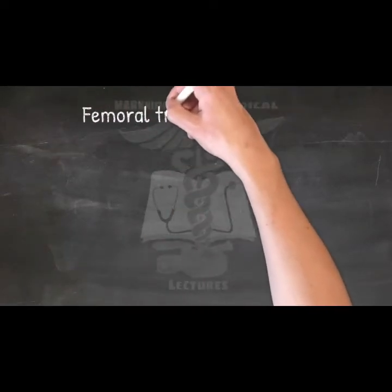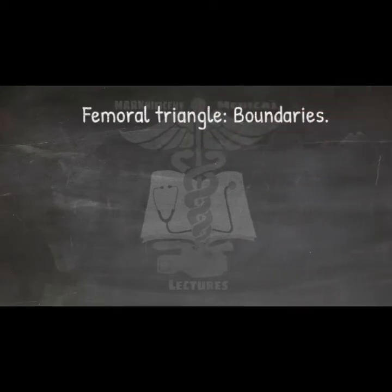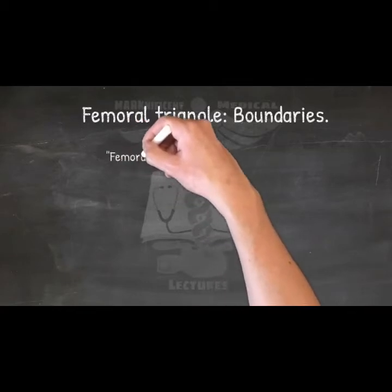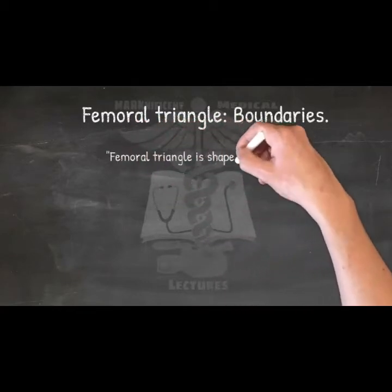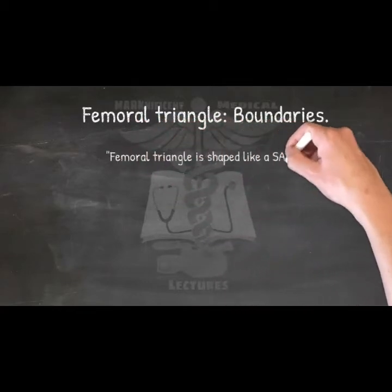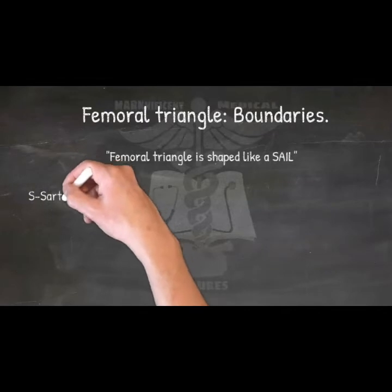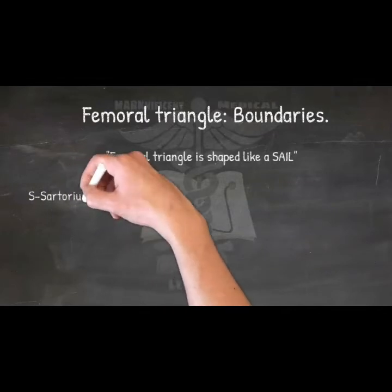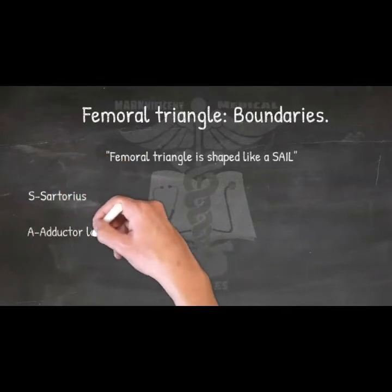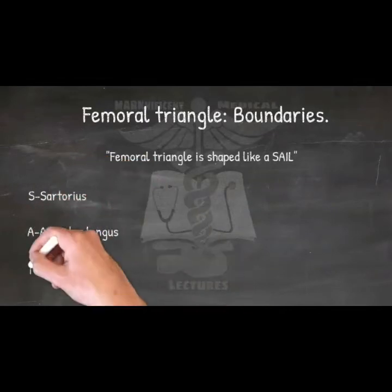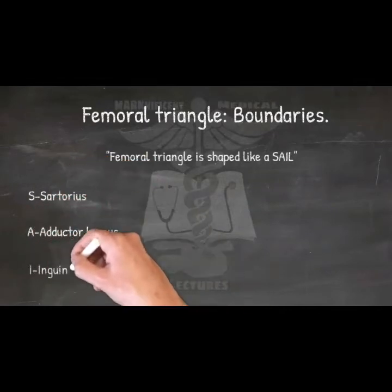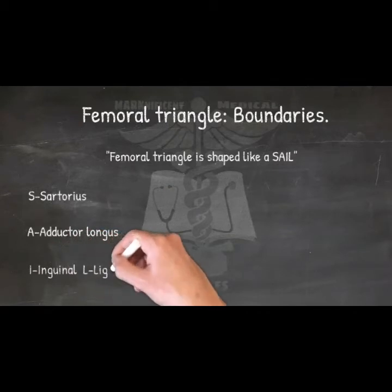Boundaries of the femoral triangle. The femoral triangle is shaped like a sail — mnemonic 'SAI': Sartorius, Adductor longus, Inguinal ligament.